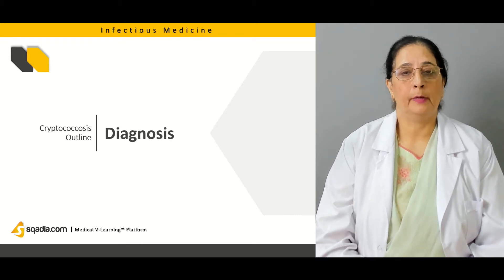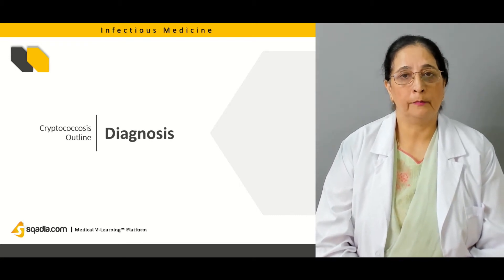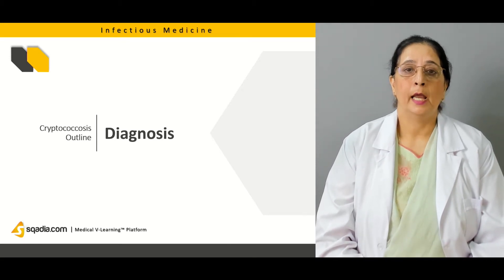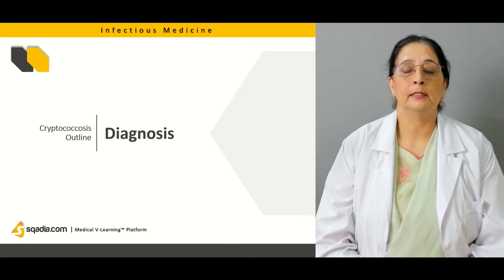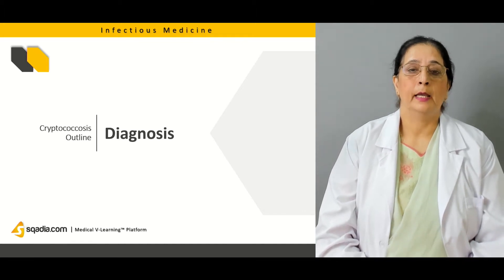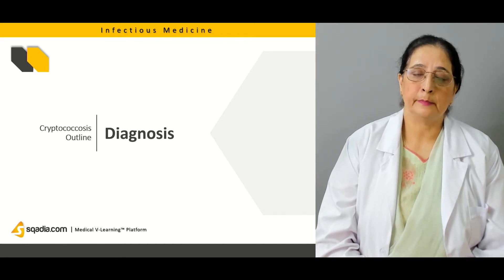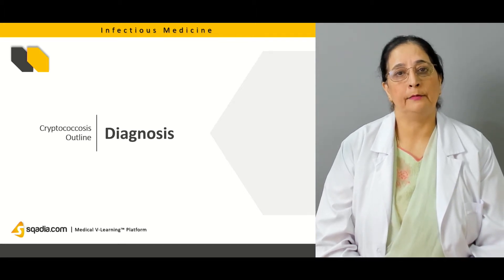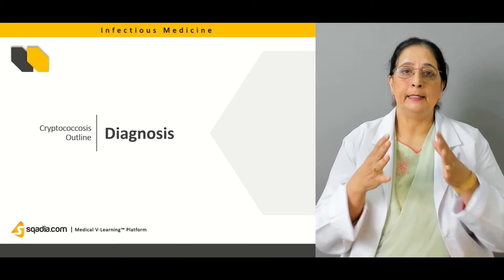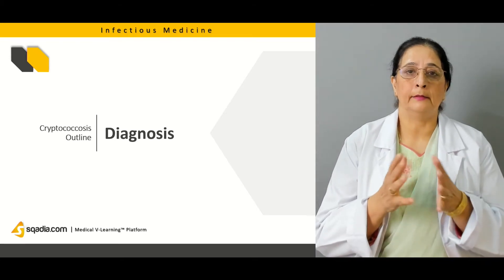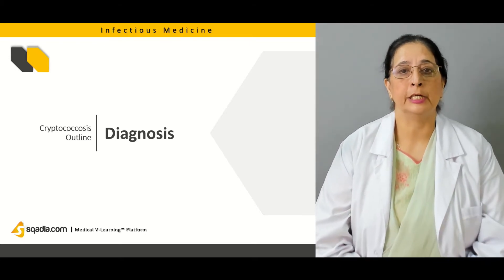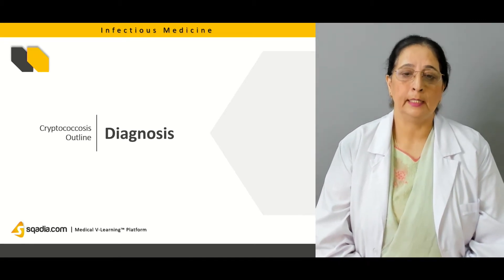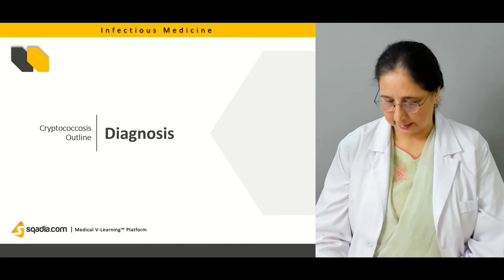Then we will talk about the tests performed for the diagnosis of cryptococcus. The most important are the blood smear and cerebrospinal smear, then cultures of blood and cerebrospinal fluid, and the direct tests performed for the detection of antigens are also important in the diagnosis. We will talk about all these tests.